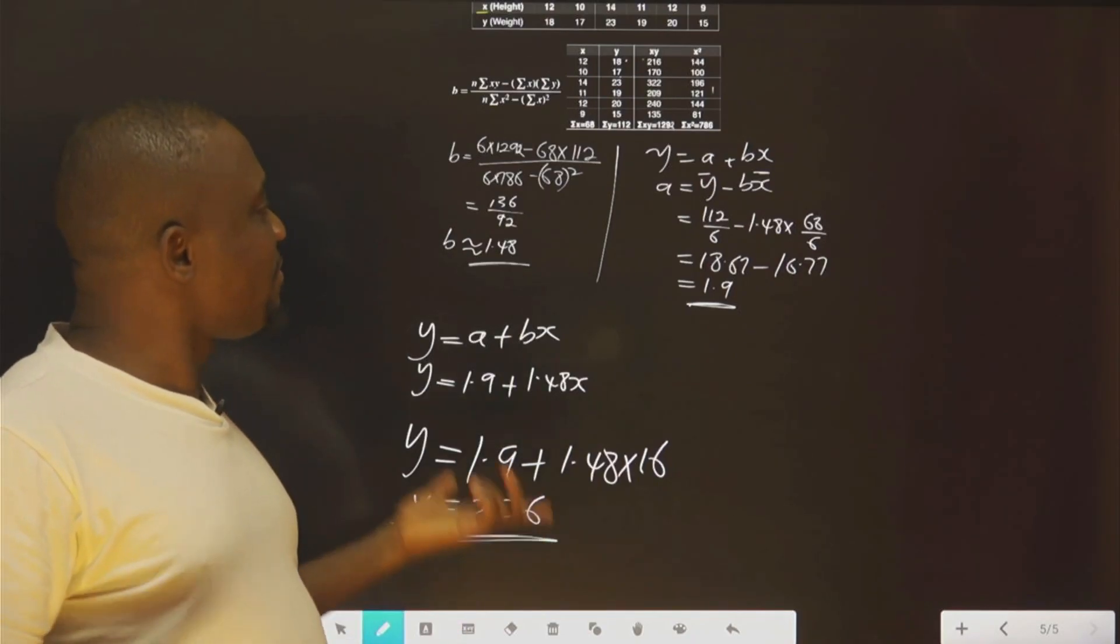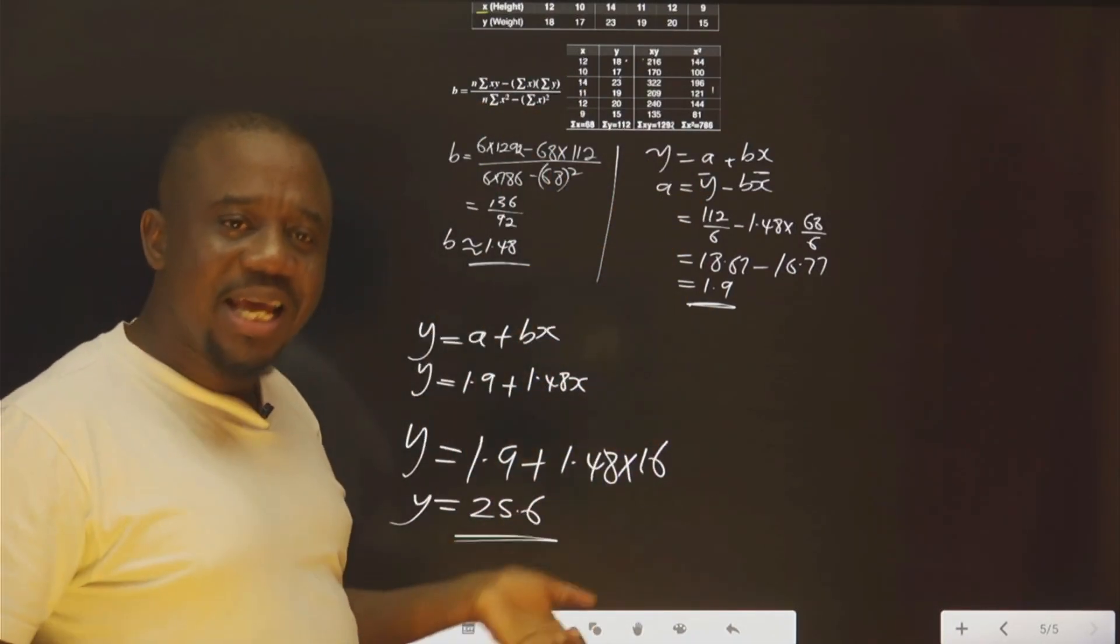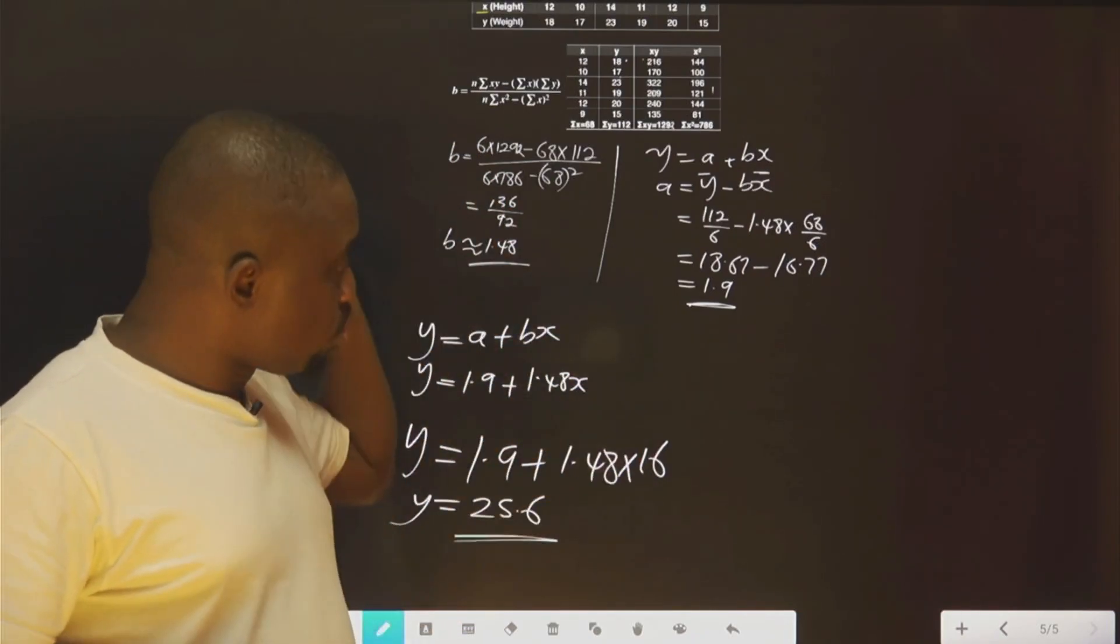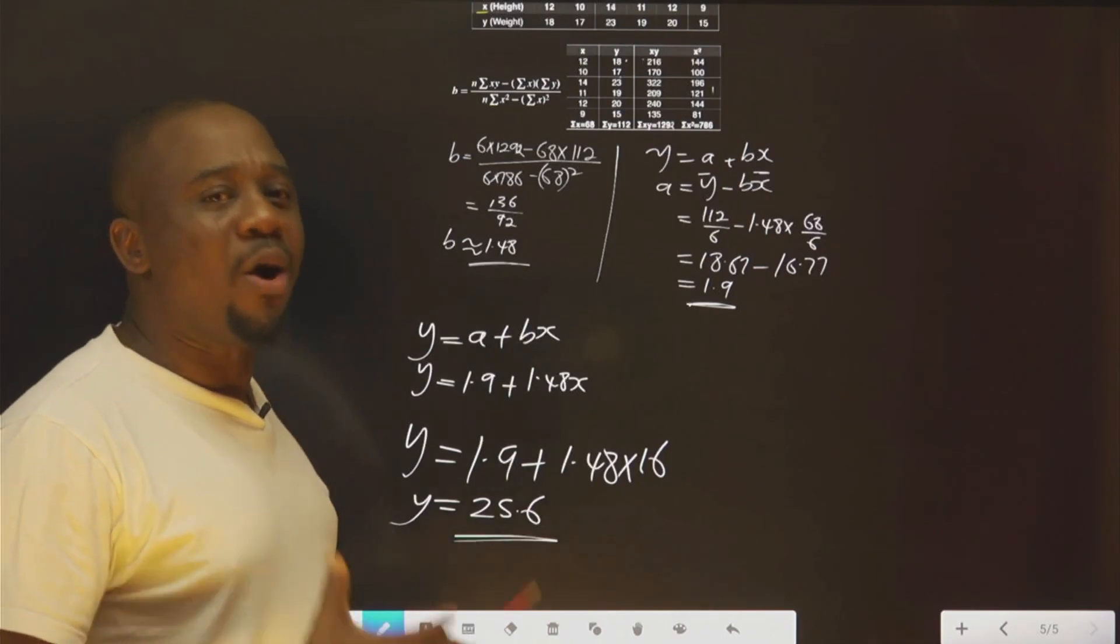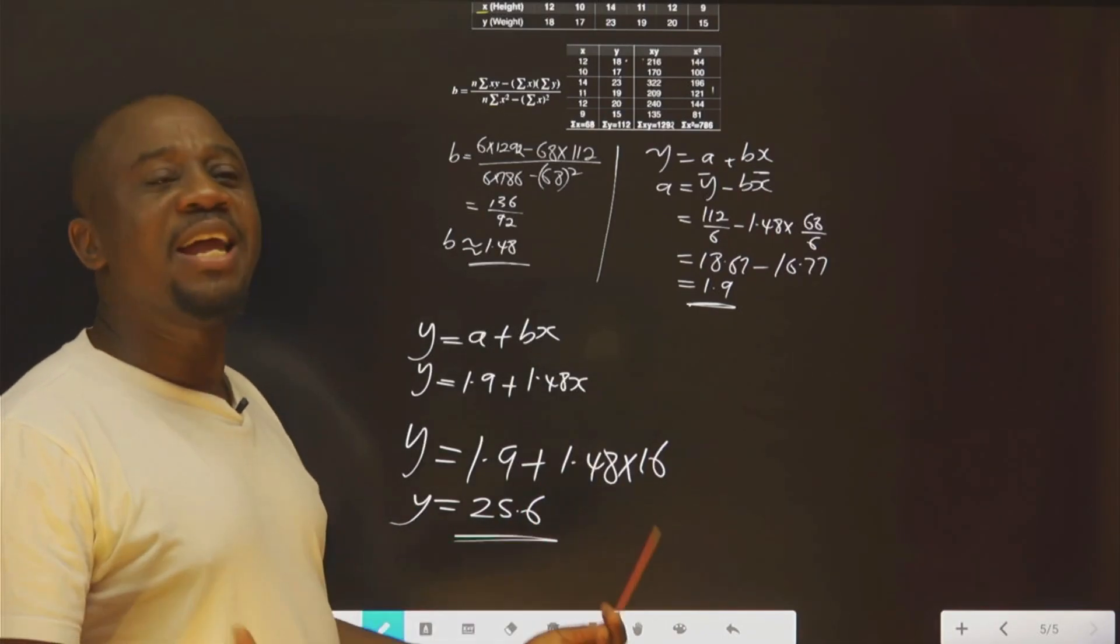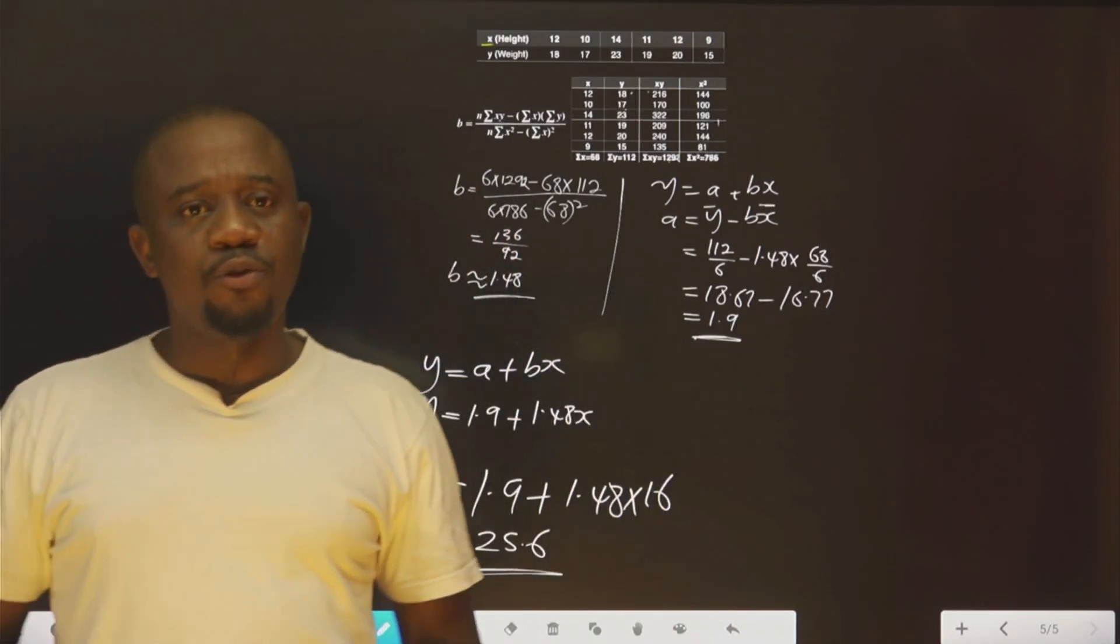This is how to solve regression. First of all, you get the coefficient of B. You get the constant A. Once you get the 2, then you substitute to get the regression line of y on x. You can solve any other question after that. All this understood, thank you for viewing.